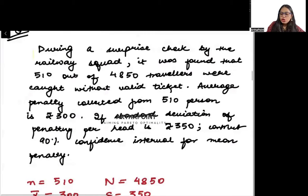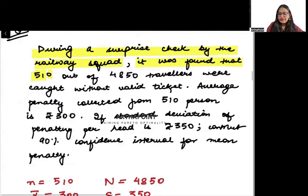It says during a surprise check by railway squad, it was found that 510 out of 4850 travelers were caught without valid ticket.